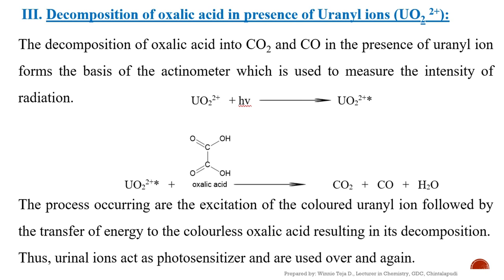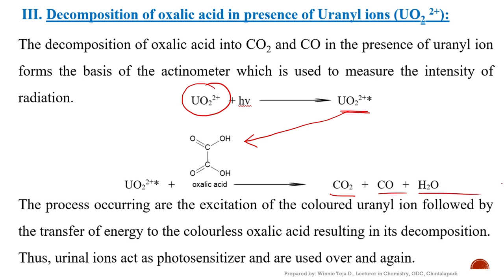In the last example — decomposition of oxalic acid — oxalic acid gets decomposed in the presence of uranyl ions (UO₂²⁺) to carbon dioxide, carbon monoxide, and water. The uranyl ions absorb light radiation and become activated, then transfer this energy to the oxalic acid so that it undergoes a photochemical reaction and gets decomposed. These are the examples of photosensitization reactions, also called energy transfer reactions.